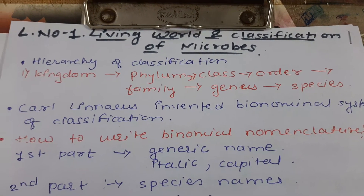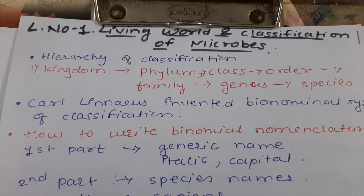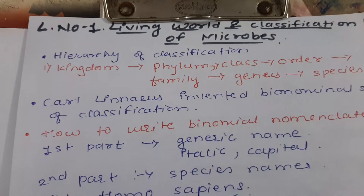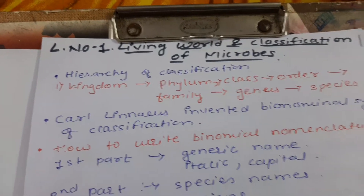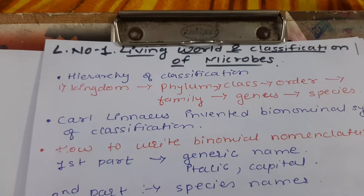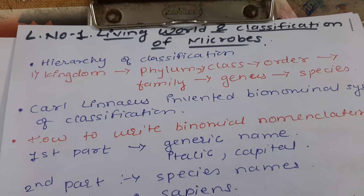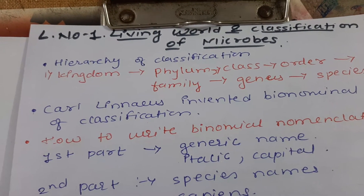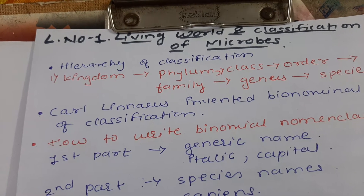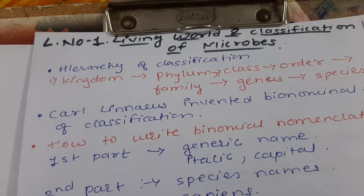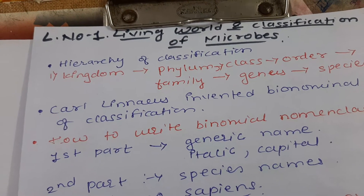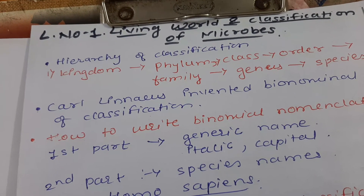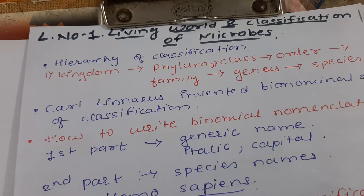Now, why is it necessary to divide or classify small organisms into groups and subgroups? It is necessary because, as we learned earlier, all living organisms on Earth have adapted according to their geographical regions, food ingestion, and defense mechanisms. While adapting, many differences are observed even among organisms of the same species.